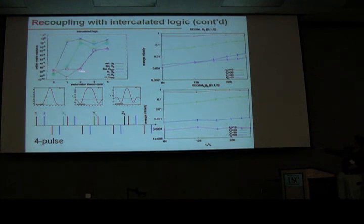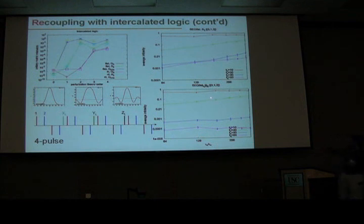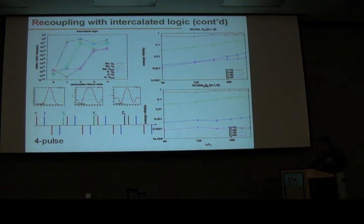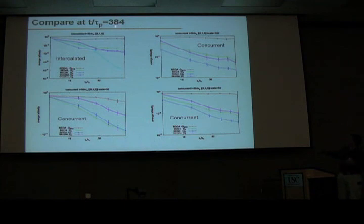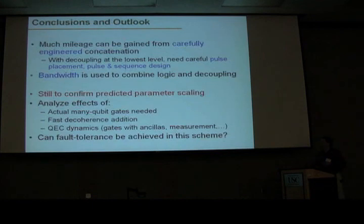This is only for the 8-pulse sequence with second-order self-refocusing pulses, but also for a 4-pulse sequence using second-order self-refocusing pulses. For the 8-pulse sequence with these pulses, you get an error of 10 to the minus 4 for the 3,1,3 code. Comparing different schemes at the final time of 384 — commensurate with all intervals used — for concurrent pulses the minimum is something like a percent, whereas with pulses at the end of the cycle before error correction, you reach something like 3 times 10 to the minus 4.